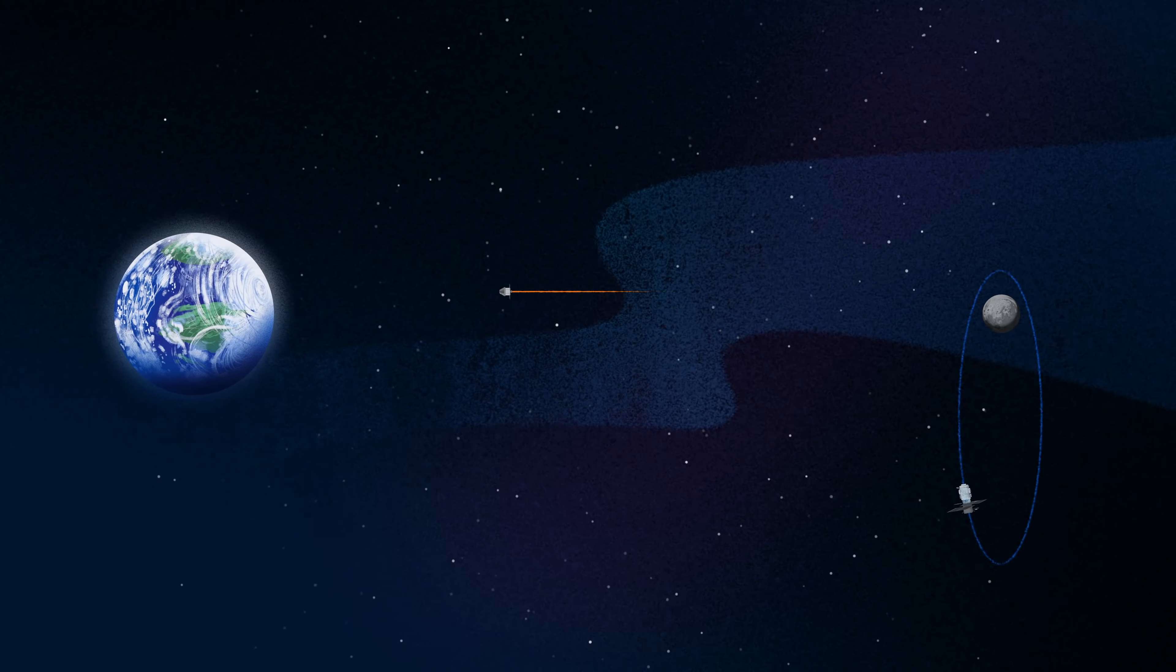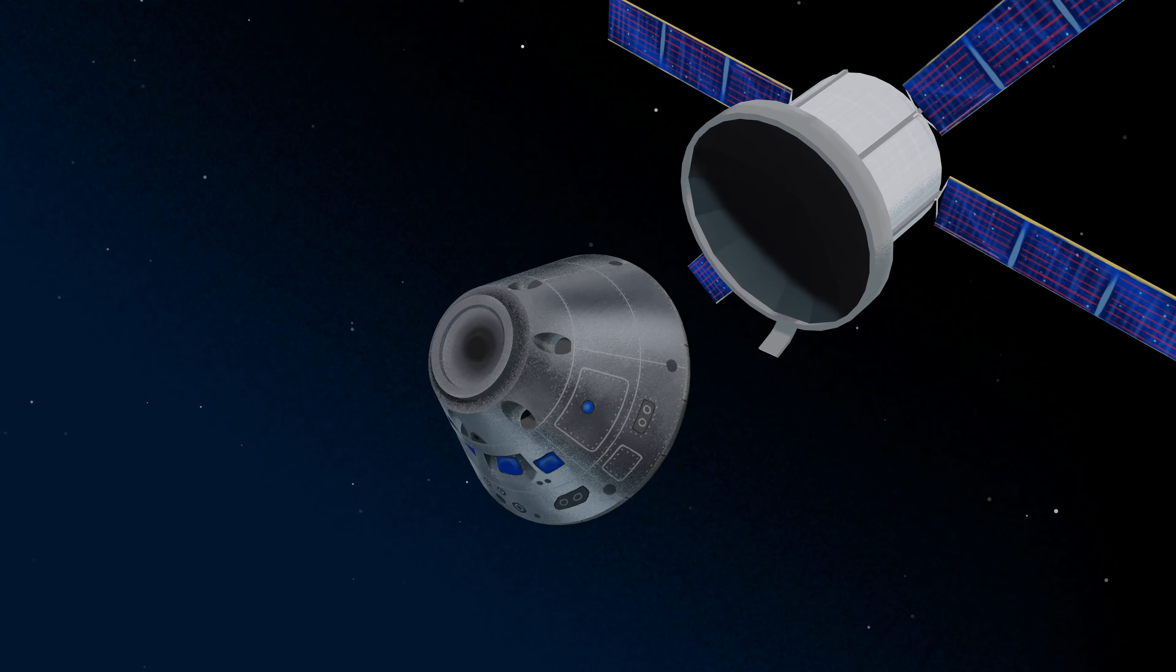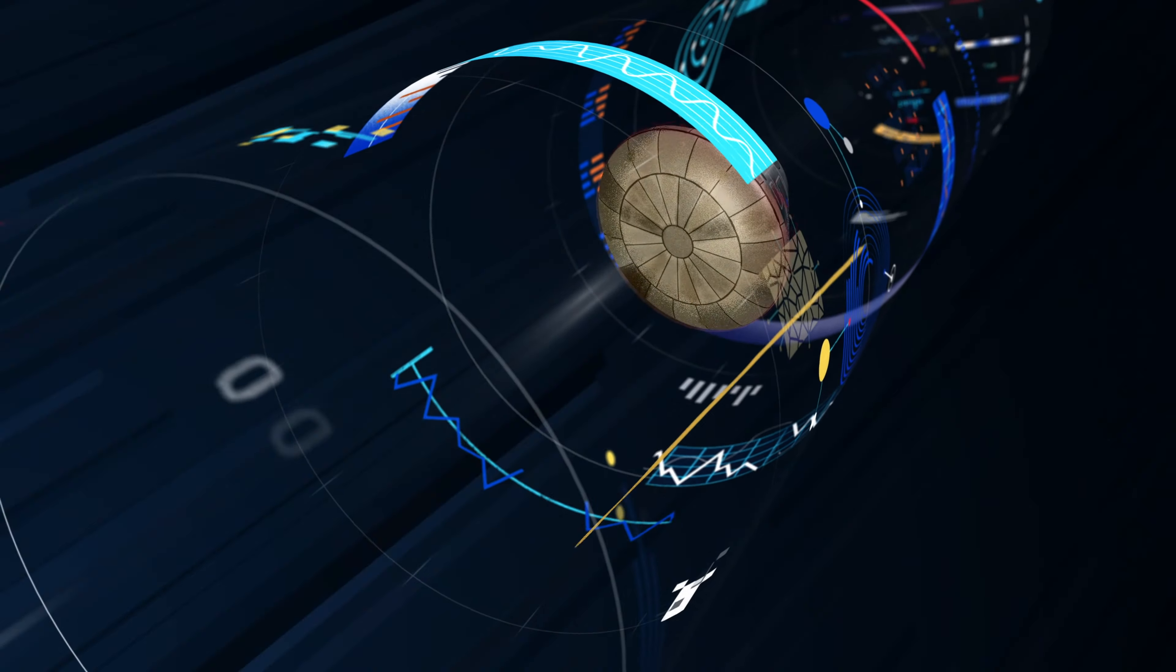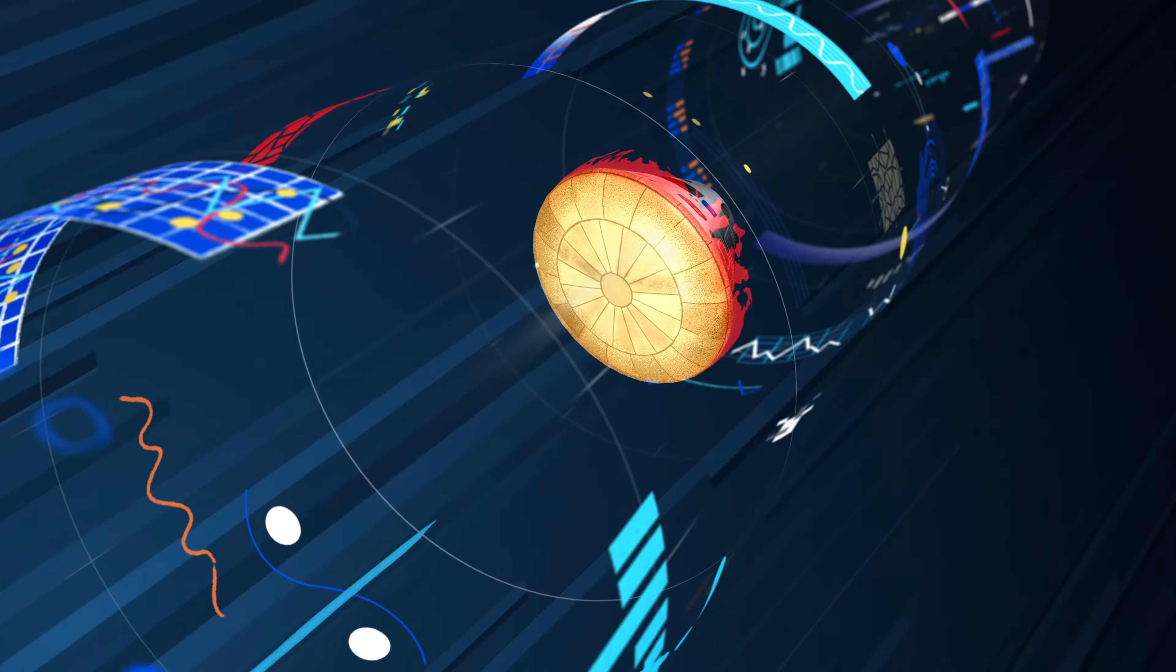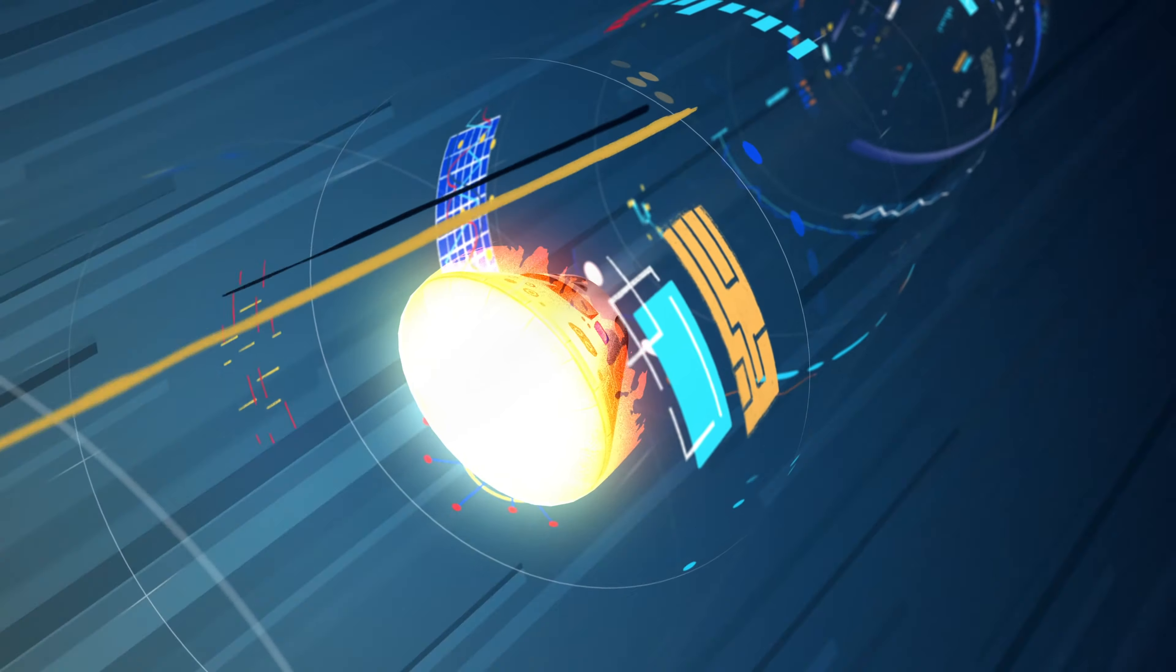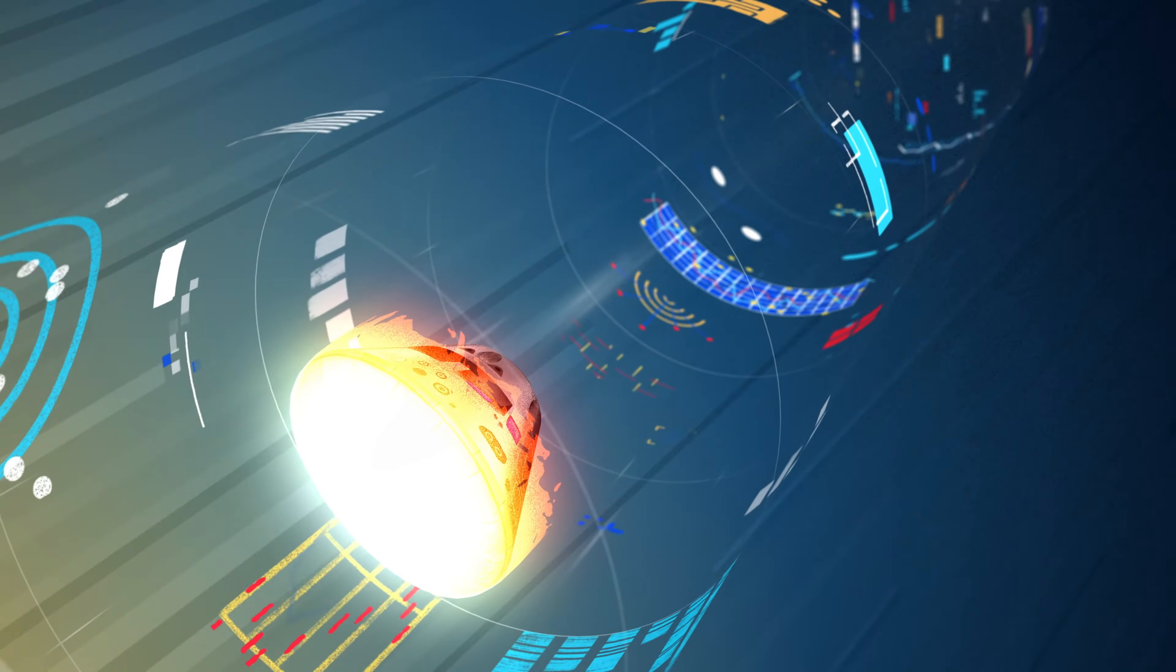As they near the end of this journey, the service module is released, and the crew module is oriented heat shield first. Entering Earth's atmosphere at 25,000 miles per hour, the friction of air slows Orion considerably, while also subjecting it to temperatures of 5,000 degrees.